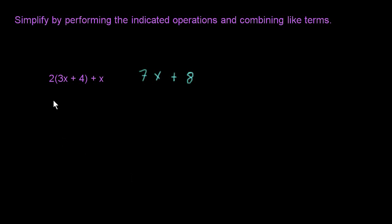The first step is to get rid of the parentheses. We can't just drop them, we need to do something here. This indicates multiplication, so we'll use the distributive property. We're going to take 2 and multiply it times 3x, and then take 2 and multiply it times 4. So 2 times 3x is 6x, and 2 times 4 is 8. The parentheses are gone, and then we still have this plus x.